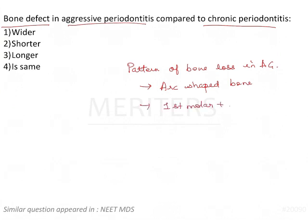This arc-shaped bone loss involves the first molars and incisors — this is the classic presentation of aggressive periodontitis. It can also extend to the premolars. There is usually a bilateral symmetry, which is known as the mirror image pattern.